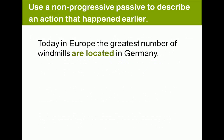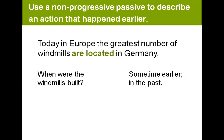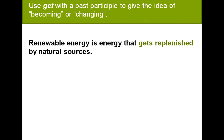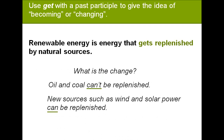Use a non-progressive passive to describe an action that happened earlier. For example: today in Europe, the greatest number of windmills are located in Germany — the windmills were built sometime earlier in the past. Use a non-progressive passive when the past participle functions as an adjective: the remote hills of Spain are dotted with tall, graceful windmills. Use 'get' with a past participle to convey the idea of becoming or changing: renewable energy is energy that gets replenished by natural sources. Oil and coal can't be replenished, but new sources such as wind and solar power can be.